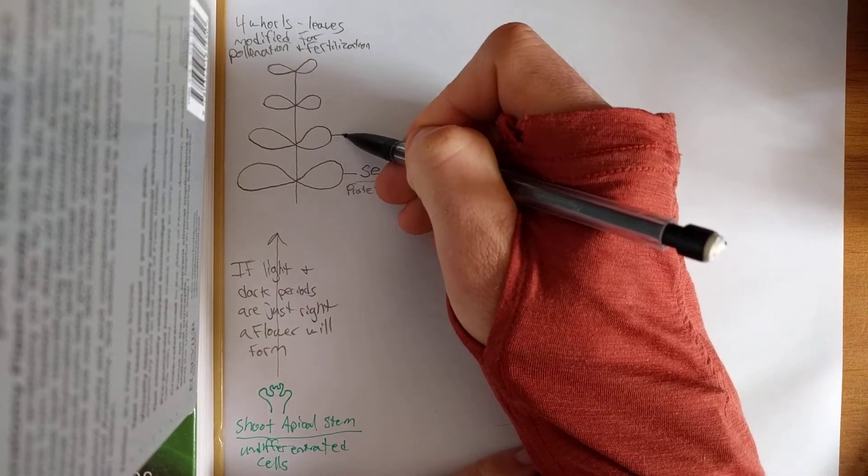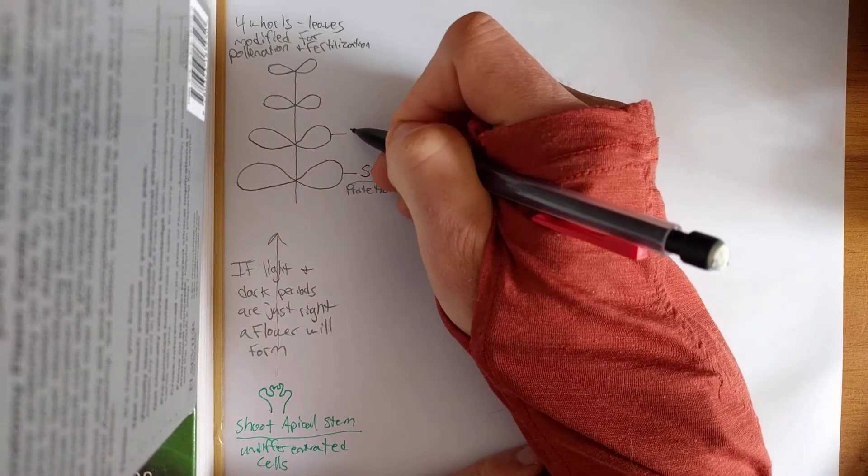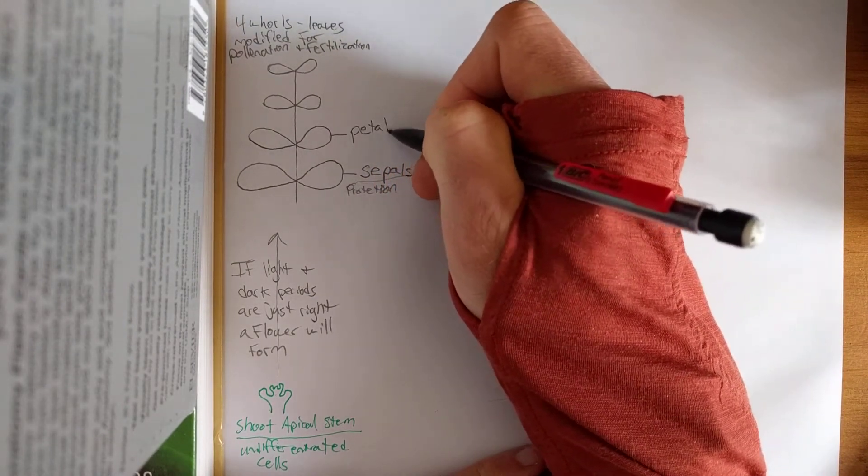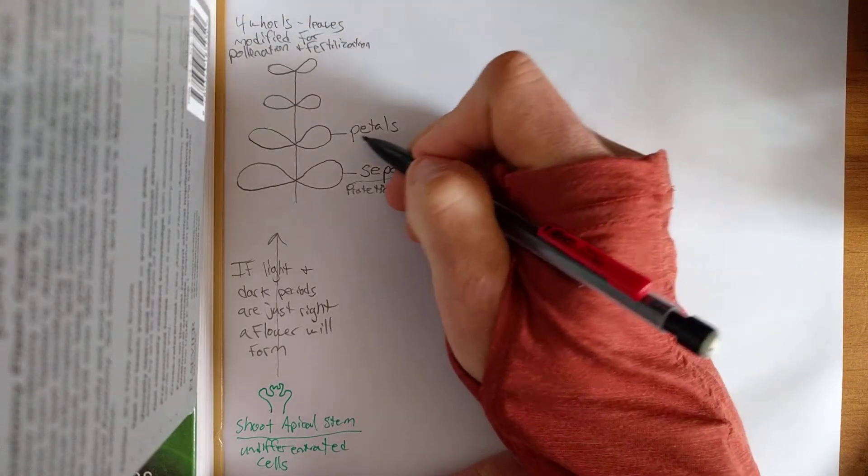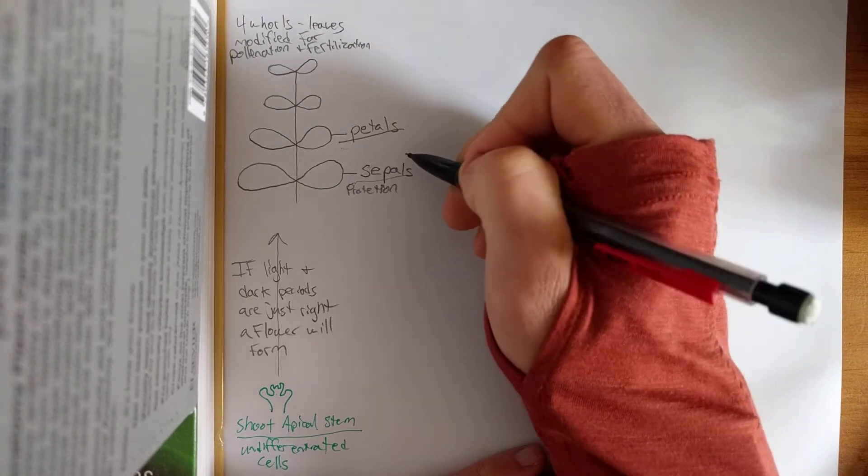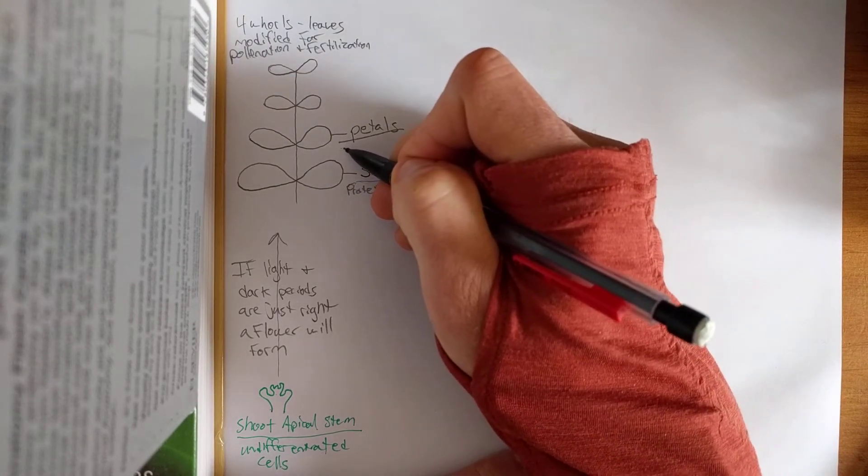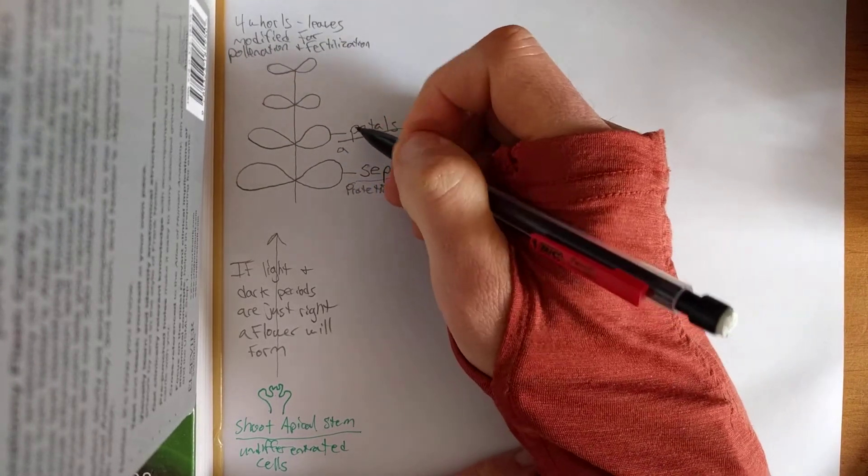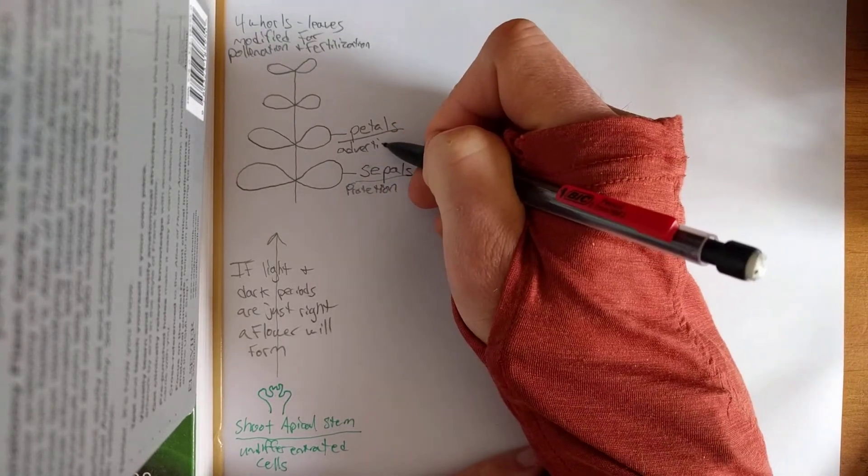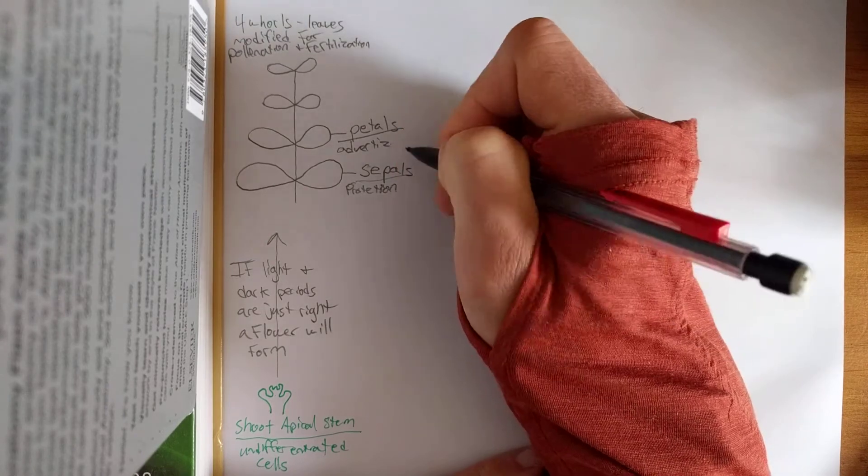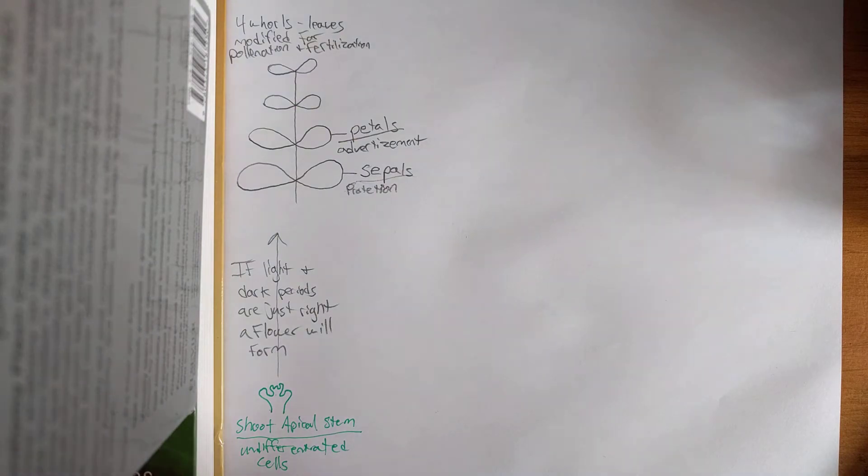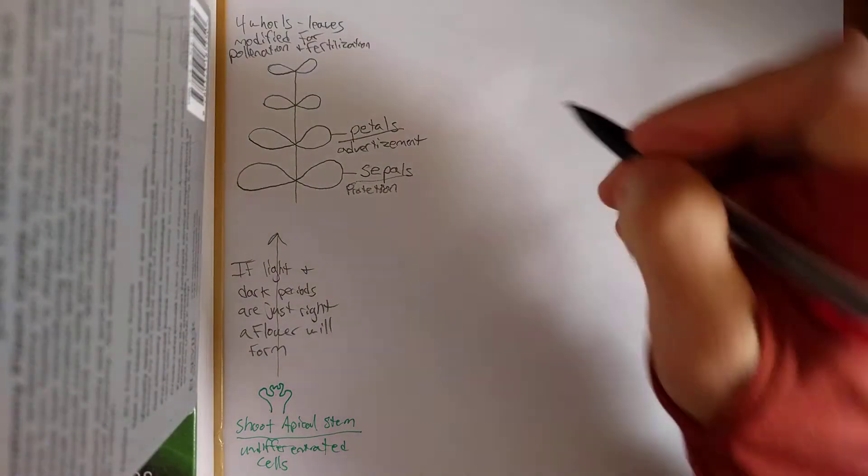Once the flower opens, you see the next whirl up. And these are what you normally know of as your petals. The thing you think about when you think of a flower. But what I want you to change your idea of is they're not for us to be pretty. They really are advertising for pollinators. They are to say, hey pollinators, this flower's ready for you to come visit.